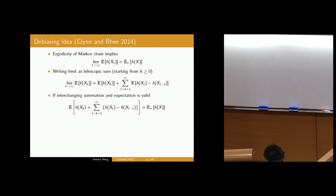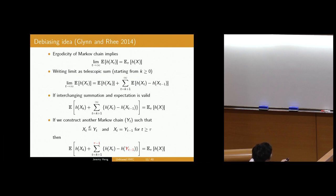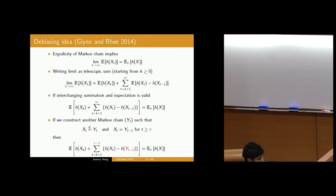If you were to think about computing what's inside the expectation as an unbiased estimator, this is tricky because I still have an infinite sum. Now if I assume I can construct another Markov chain Y such that X and Y have the same marginal distributions for all times, then I could replace x_{t-1} with y_{t-1} under the expectation. If I assume these chains meet with a lag of 1 at some random time tau, and they stay together after they've met, then I can truncate this infinite sum.